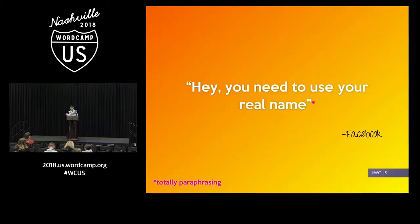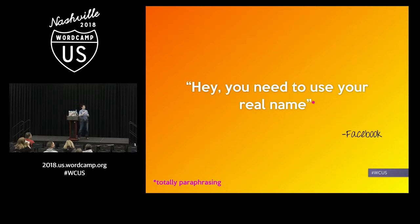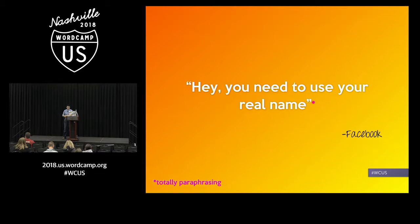So let me tell you a story. A couple of years ago, Facebook started cracking down on their real name policy, requiring that everyone use their real name on Facebook. They asserted that authentic identity is important to the Facebook experience — 'Our goal is that every account on Facebook should represent a real person.' That's a good goal. But what did that look like actually in practice?